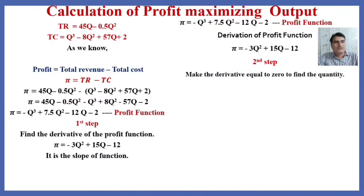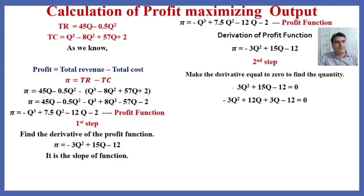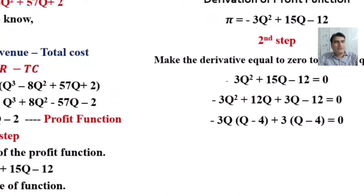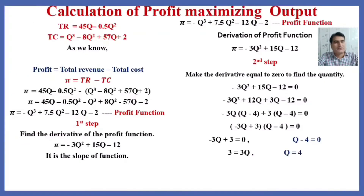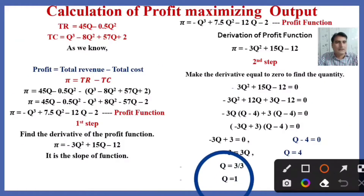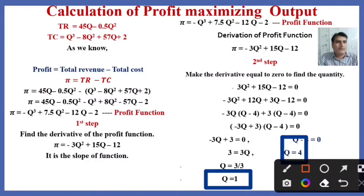Take the derivative equal to zero to find the quantity. Using this derivative and setting it equal to zero, you can see there are three factors. We break 15Q into factors 12Q plus 3Q, then take the common factor minus 3Q from 3Q squared plus 12Q, and plus 3 from 3Q minus 12. After solving, the quantity equals 1 and 4.